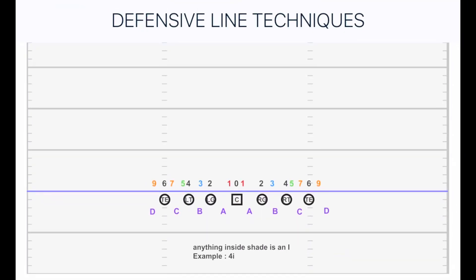So I've got this diagram pulled up for you, and throughout this video I'll be able to give you some picture examples of defensive linemen techniques to go along with this diagram. First things first, you can see I've got the offensive line kind of spread out so you're going to be able to tell the difference. We've got a center, right guard, right tackle, and a tight end to the right. Then anything to the left is left guard, left tackle, and then the tight end to the left.